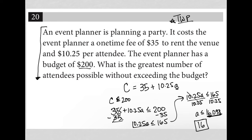And you can always check your math as well and just say, what is 16 times 10.25? That's $164 plus the $35 that you're going to pay. That's $199. You couldn't add another attendee if your budget is $200. So our answer here is 16.